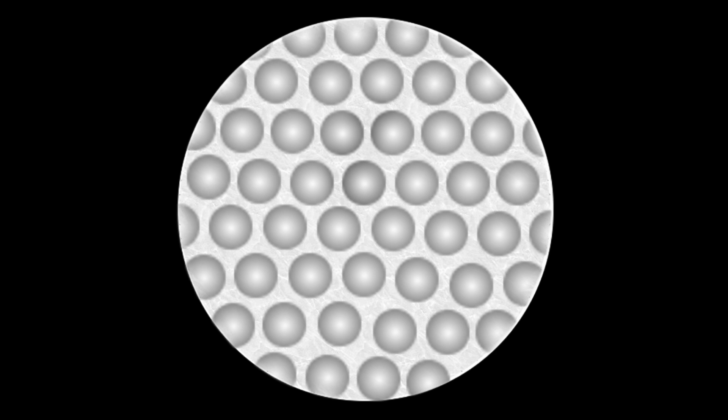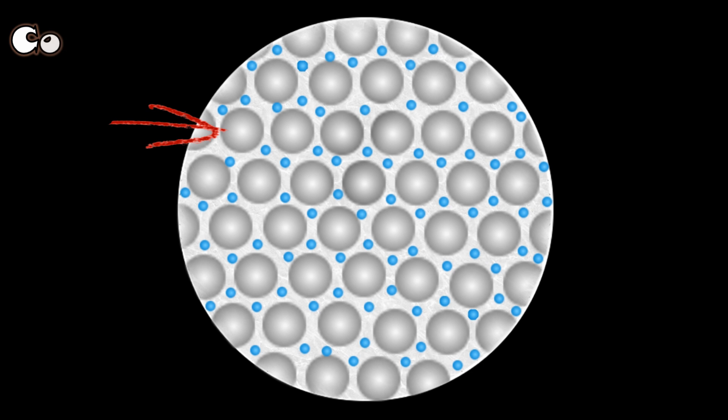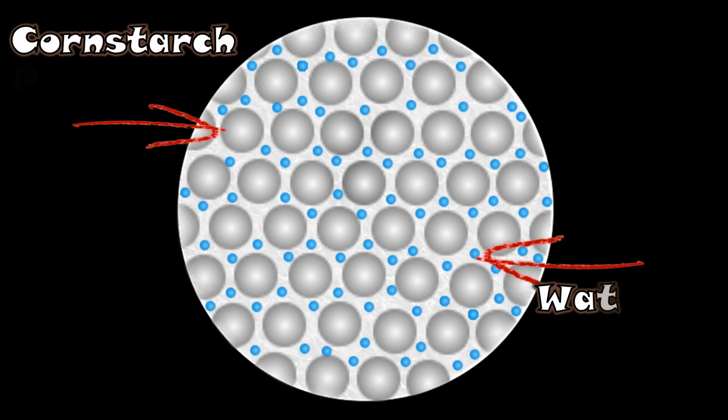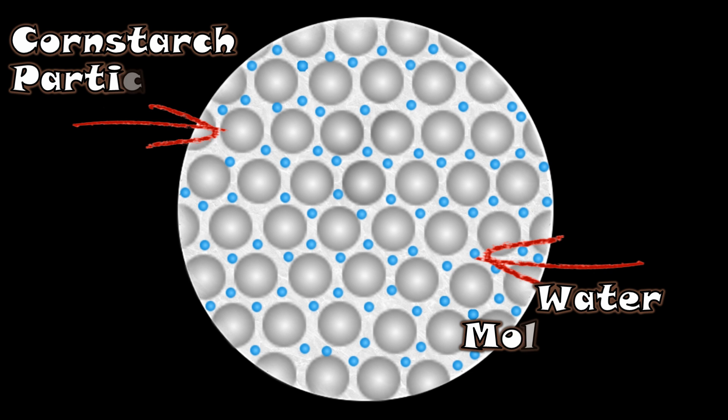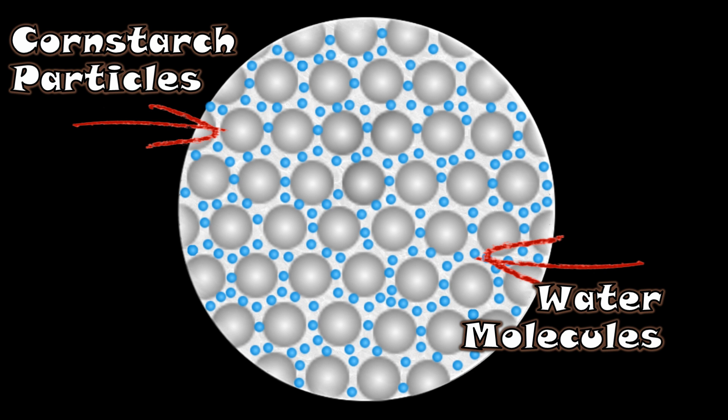The behavior of the mixture can also be explained through chemistry. Due to the corn starch particles present in the mixture, the mixture is able to exert back the action force applied on it. The particles of the corn starch were not completely dissolved; they were just disseminated throughout the water. Without action force, the corn starch particles move along the movement of the water molecules. With action force, the corn starch particles are compressed, making the mixture look like a solid.